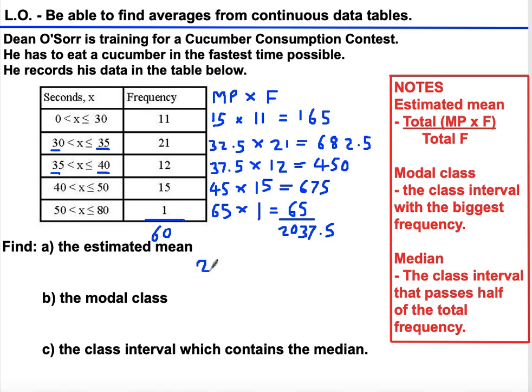The estimated mean is going to be the total midpoint times frequency divided by the total frequency. Remember, you must total up your frequency, because a common mistake would be to divide by how many class intervals there are, and that would be incorrect. If we do this calculation, 2037.5 divided by 60, we get 33.9583.